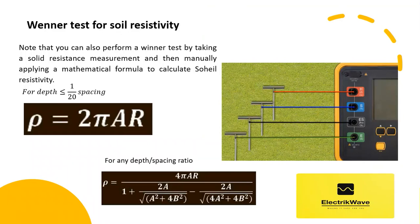Note that you can also perform a Wenner test by taking a soil resistance measurement and then manually applying a mathematical formula to calculate soil resistivity as shown here, for depth less than or equal to 1/20th spacing, and for any depth by spacing ratio.